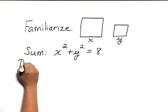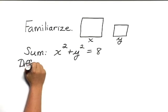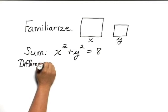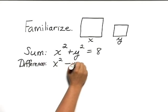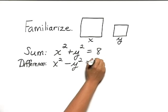We're also told that the difference of their areas is 2, so we can translate that as x squared minus y squared equals 2.